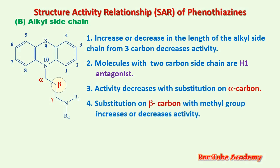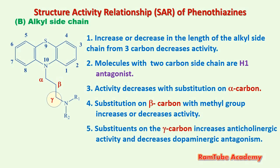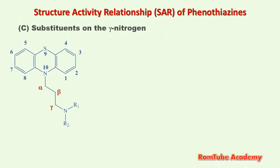Third point: activity decreases with substitution on the alpha carbon. Fourth point: substitution on the beta carbon with a methyl group decreases activity. Fifth point: substitutions on the gamma carbon increase anticholinergic activity and decrease dopaminergic antagonism.